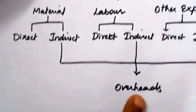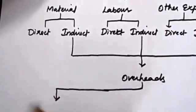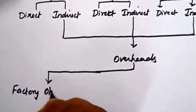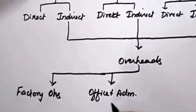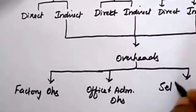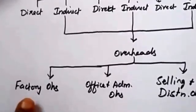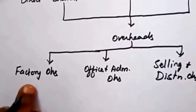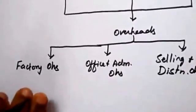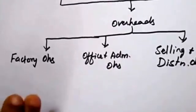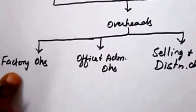Overheads are classified into three categories: number one is factory overheads, second is office and administrative overheads, and third is selling and distribution overheads. Factory overheads means indirect factory expenses — for example, factory rent and depreciation for machinery. Machinery is required for the production process, but depreciation is an indirect expense, so it comes under factory overheads.